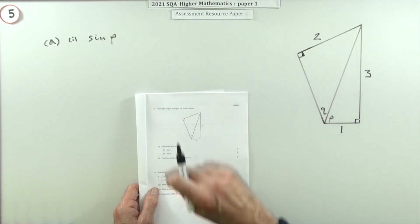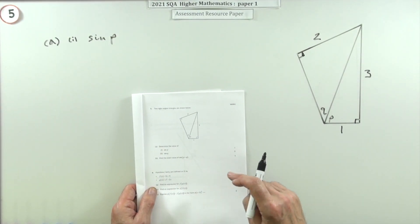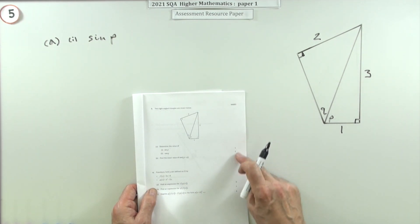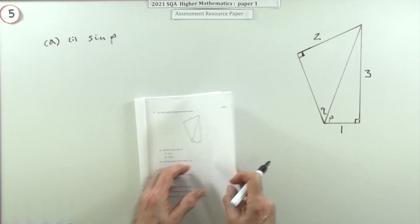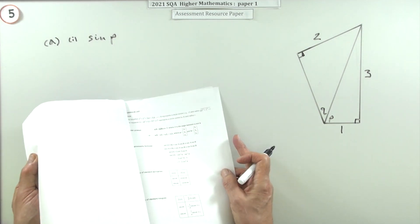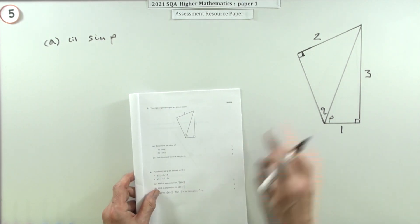Number five from the 2021 Higher Maths Paper One resource paper. Six marks this time, and it's that trigonometrical formula question, the addition formula. You've got them at the front if you don't remember them.